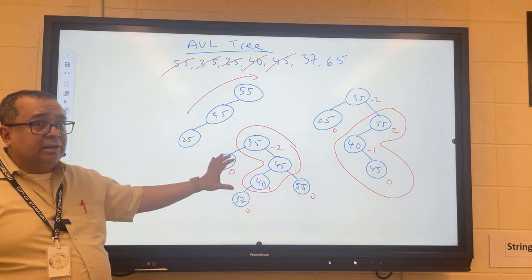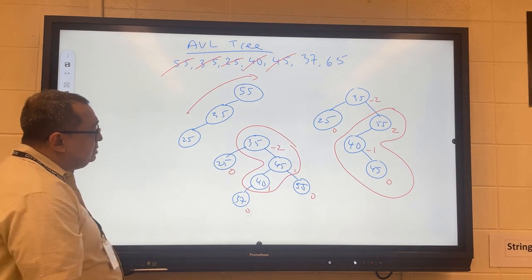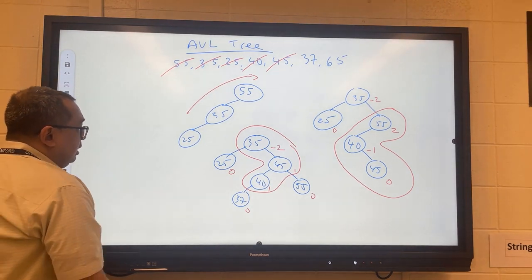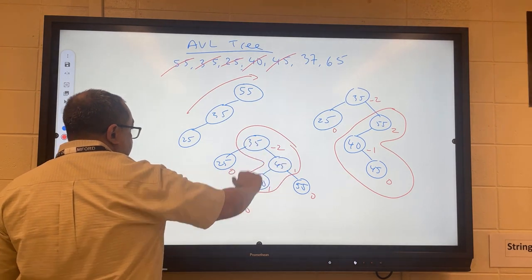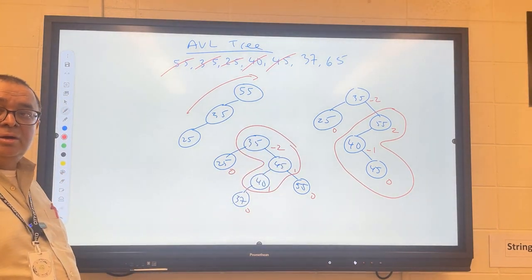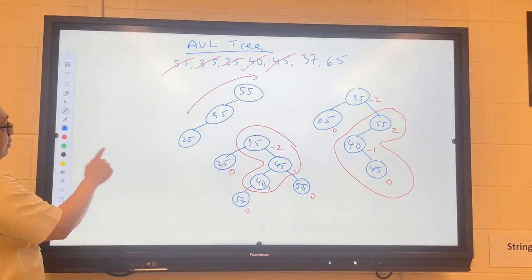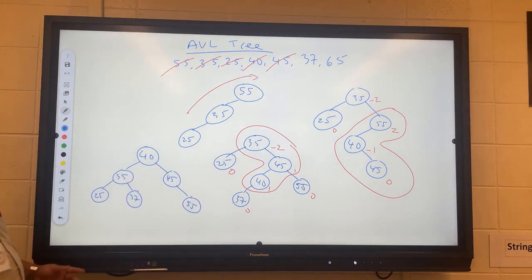So we need to do an RL balance. To do an RL balance, we're going to rotate and then rotate again. Who can tell me what does the tree look like here? Okay, Mila, you're up again. What's the new root going to be? 40. Okay. And then left child? Everybody get that?